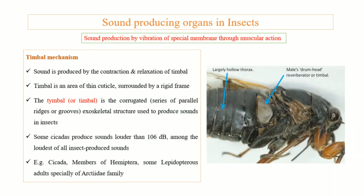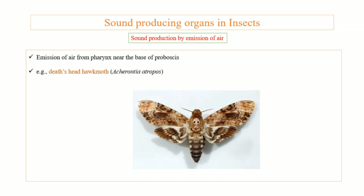The last method is sound production by emission of air. An example is the death's head hawk moth, in which air is forcefully pushed through its pharynx to produce sound. This concludes the discussion of sound-producing organs and sound production methods in insects.